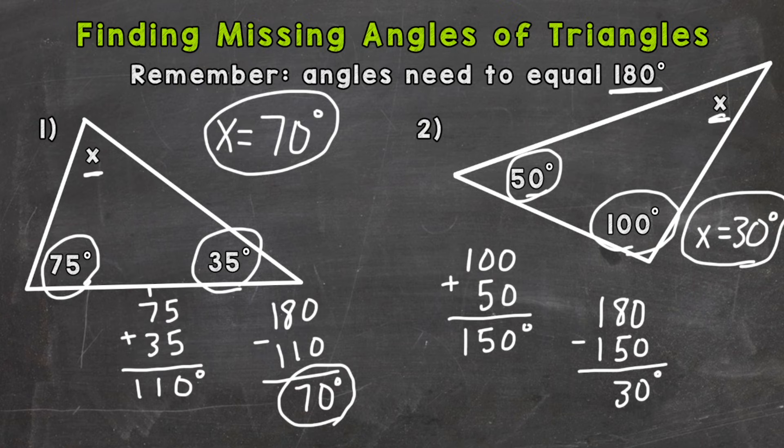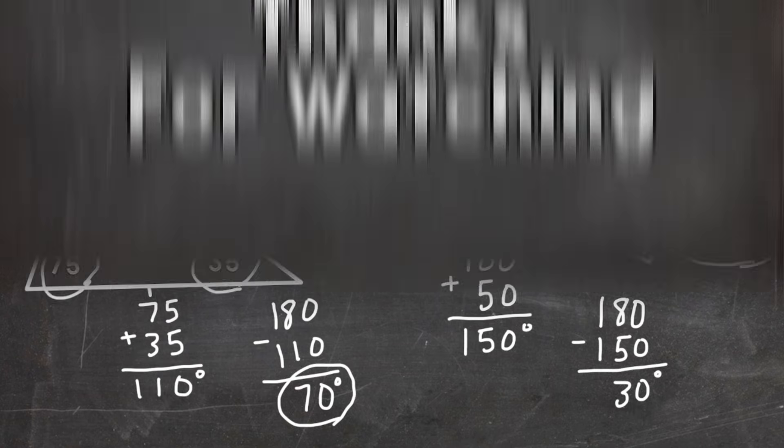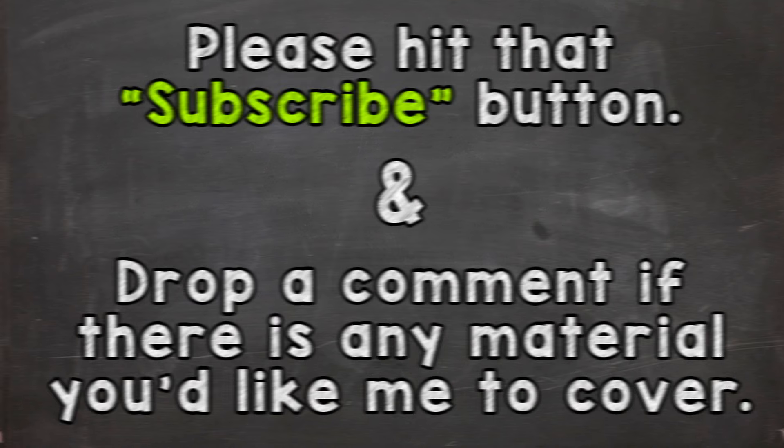So there you have it. Finding the missing angle of a triangle: add what you're given and then subtract that from 180 degrees. Thanks so much for watching. Until next time, peace.